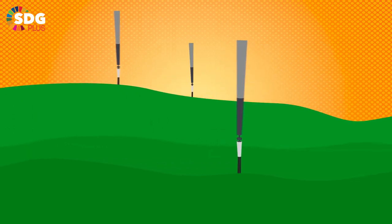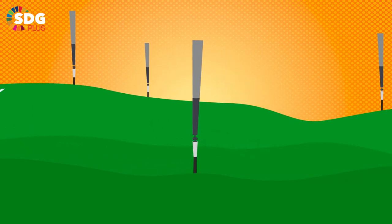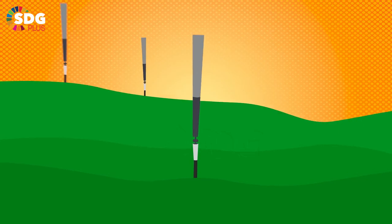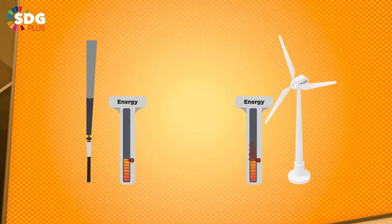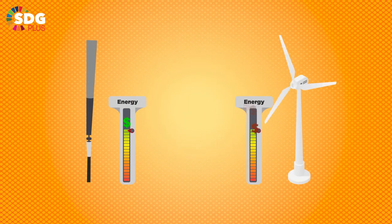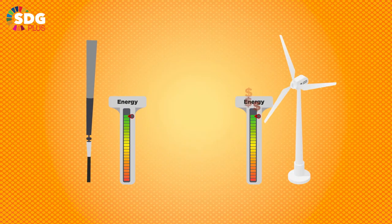Then there's bladeless turbines, cylinders that are fixed vertically with an elastic rod. The cylinder oscillates on a wind range, which then produces electricity. They generate the same amount of electricity as traditional wind turbines, but for 40% less money and using less land.